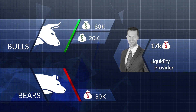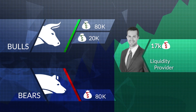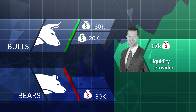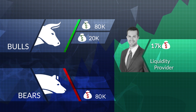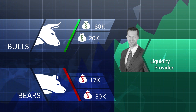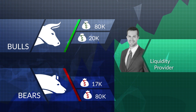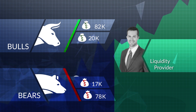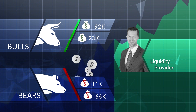If the bulls' prediction turns out to be true and the price of the asset rises, the liquidity provider will cover the discrepancy using its own money in order to make sure the bulls get the return they're entitled to, and to cover for gaps created by insufficient funds accumulated by the bears' investments.